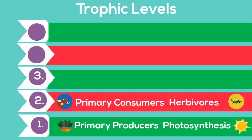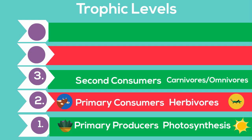Level 3 is made up of secondary consumers. They consume Level 2 animals. Carnivores, who are meat eaters, and omnivores, which eat both meat and plants, are found on Level 3.